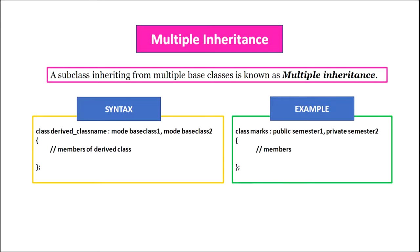A subclass inheriting from multiple base classes is known as multiple inheritance. The syntax is: class, derived class name, colon, visibility mode base class 1, visibility mode base class 2, and then the body of the child class. For example, class Marx inheriting from two classes, semester 1 and semester 2, is written as: class Marx colon public semester 1, comma private semester 2. This means class Marx is inheriting from class semester 1 publicly and from class semester 2 privately.